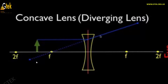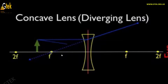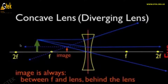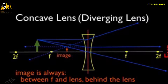This dotted line specifies how the ray passes through the object to the focus, which is placed on the principal axis, and is reflected back as seen through the naked eye. The image is always located between f — the focus point — and the lens, behind the lens.